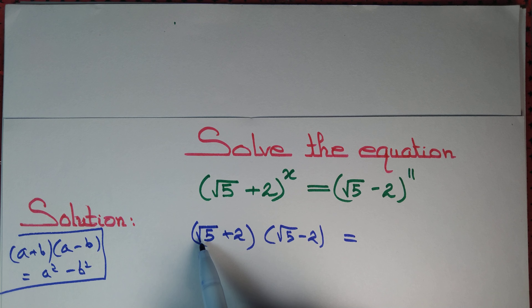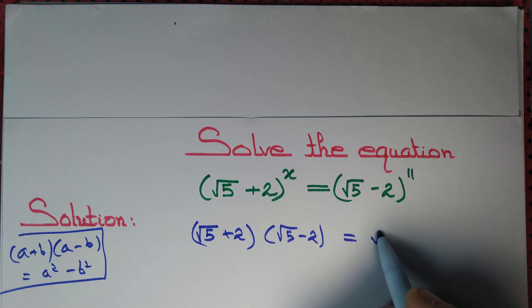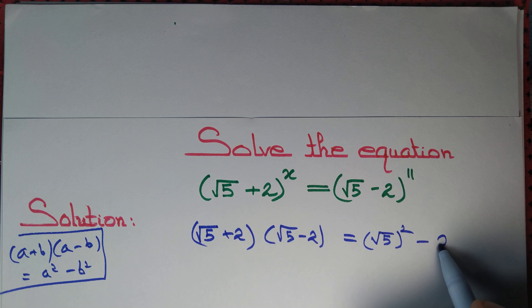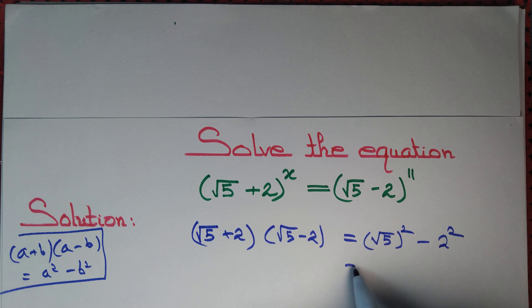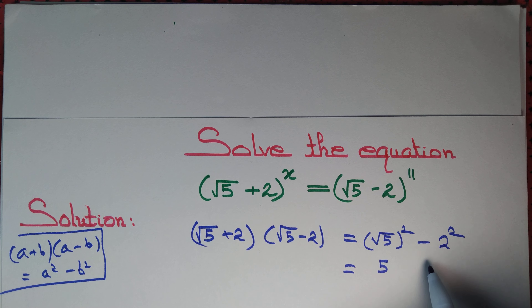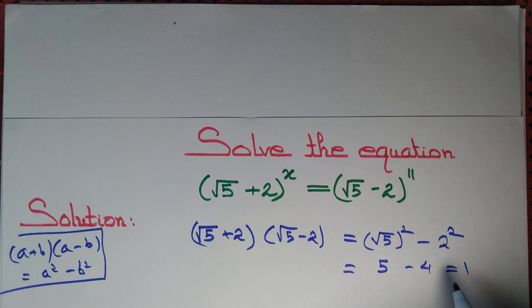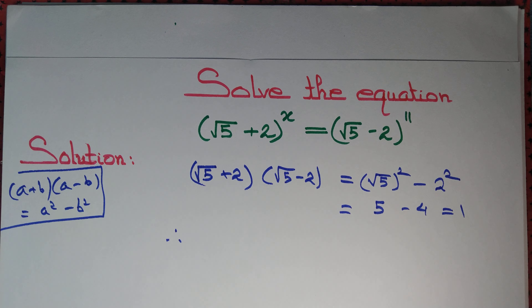Here a = √5 and b = 2, so (√5 + 2)(√5 - 2) = (√5)² - 2² = 5 - 4 = 1.